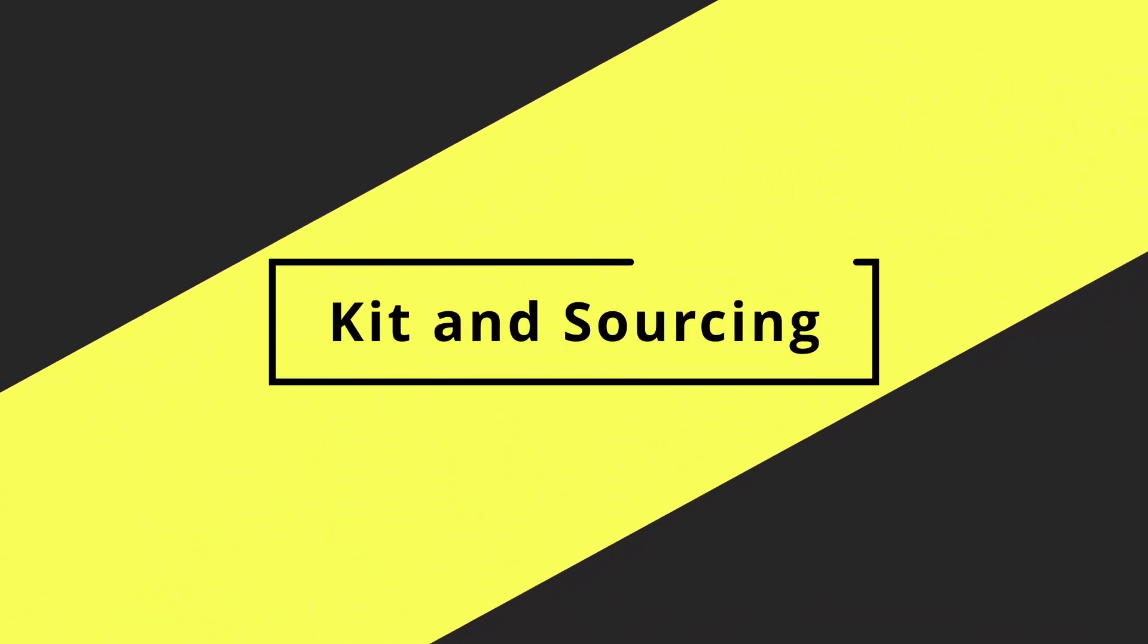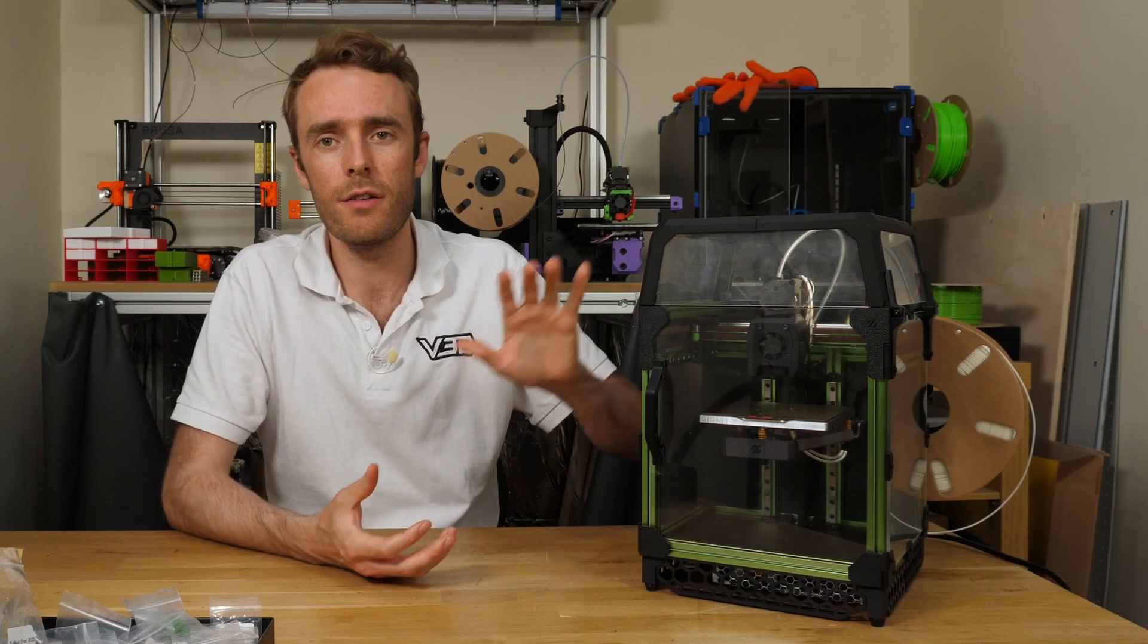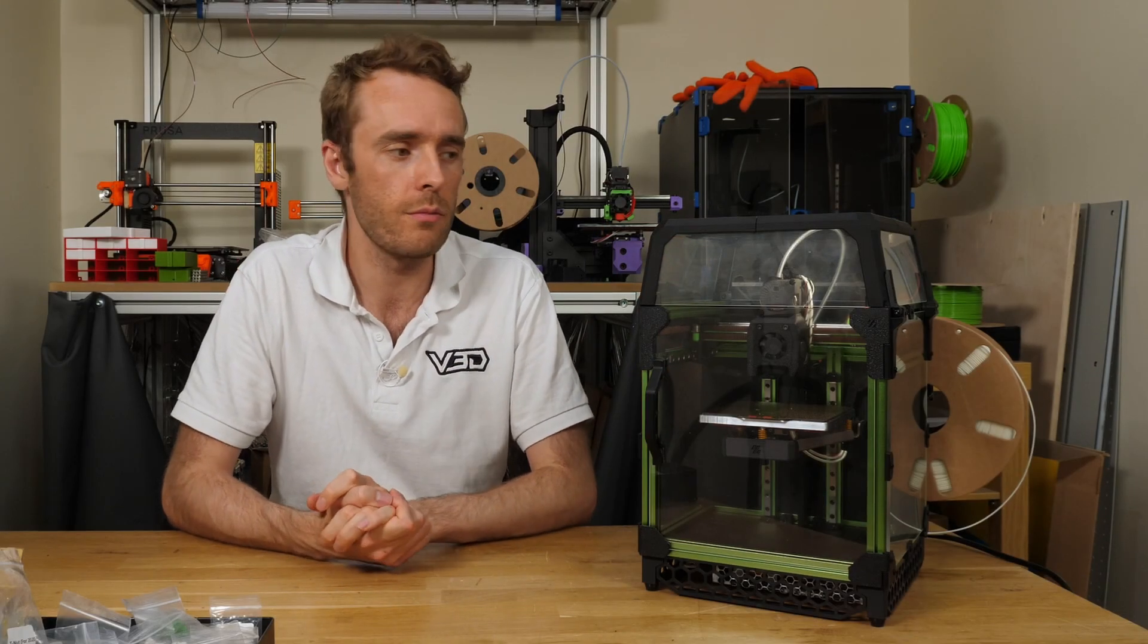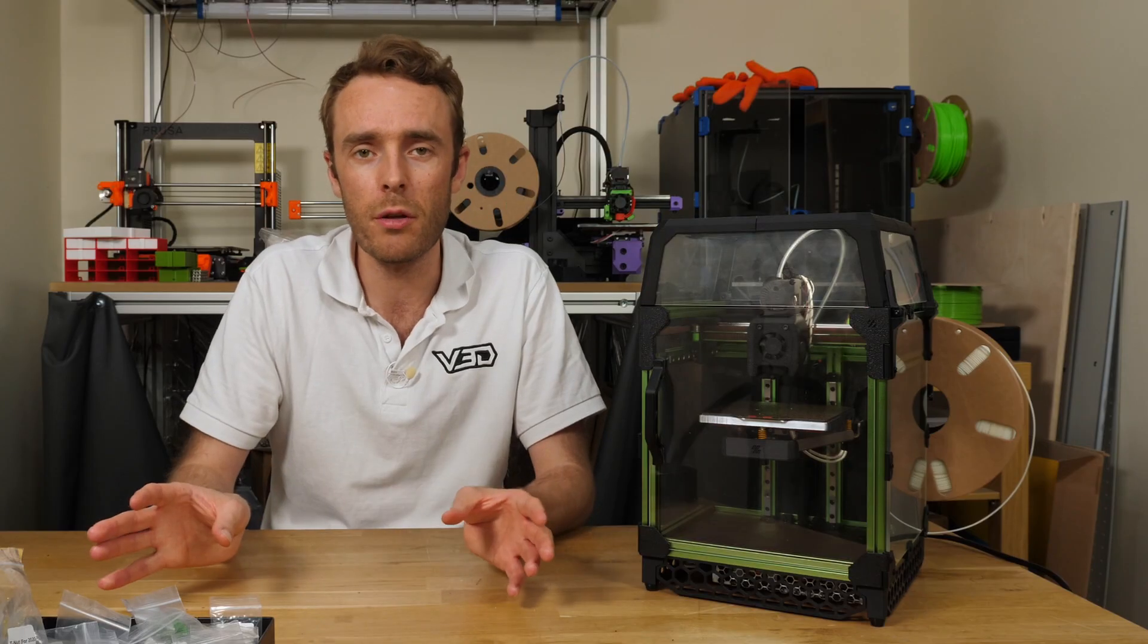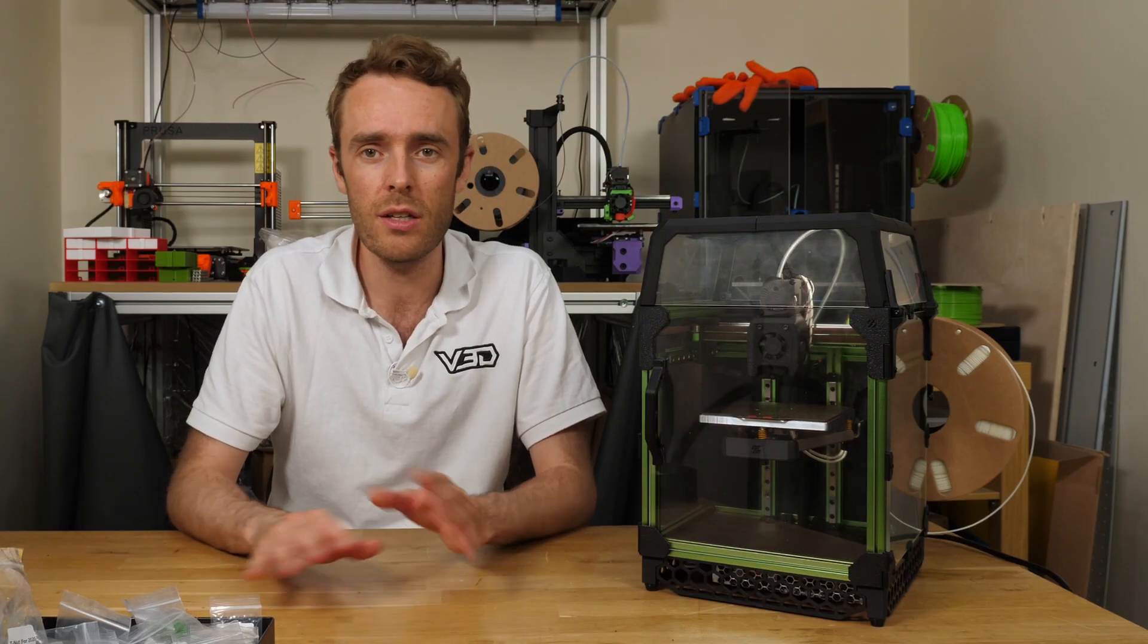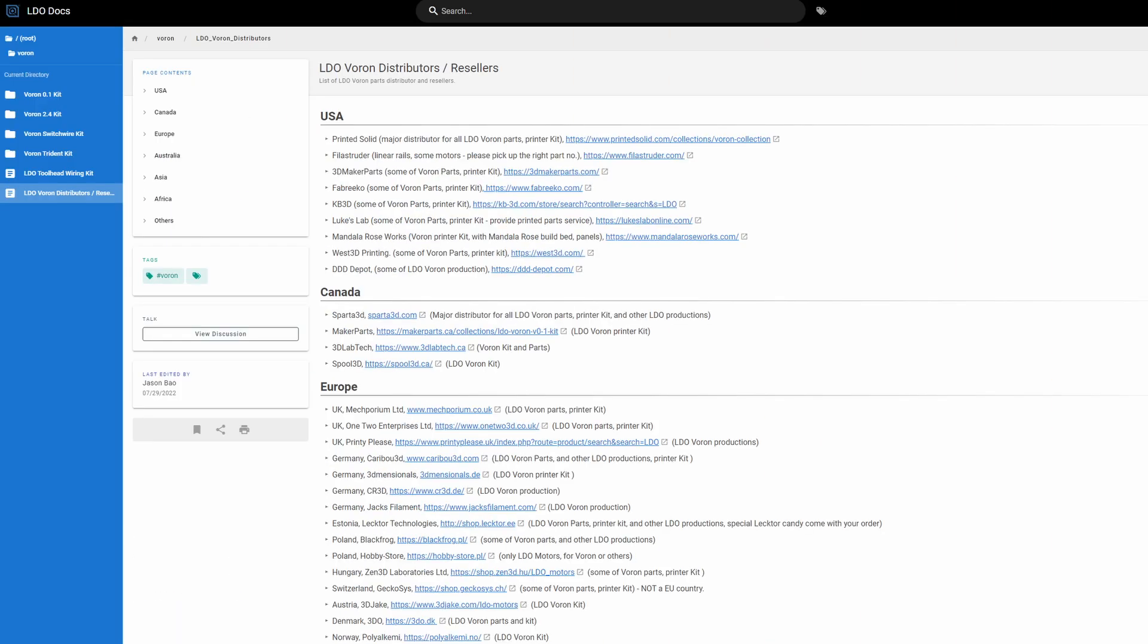By default, the V0 is designed to be a self-sourced DIY kit, so you buy all the parts from different shops wherever you can get them, and then you put the whole printer together yourself. While that's definitely possible and works pretty well, it's also kind of nice just to get a kit.